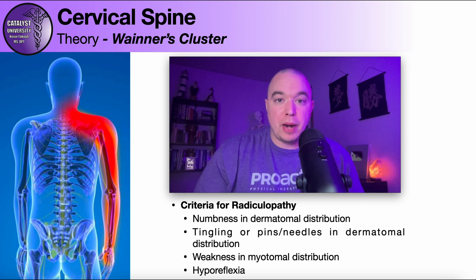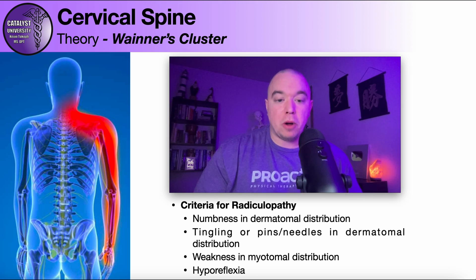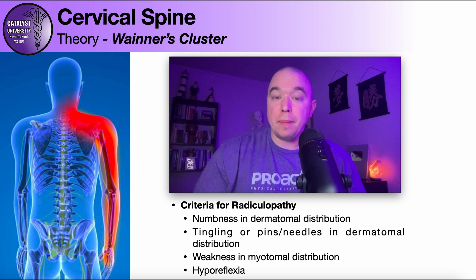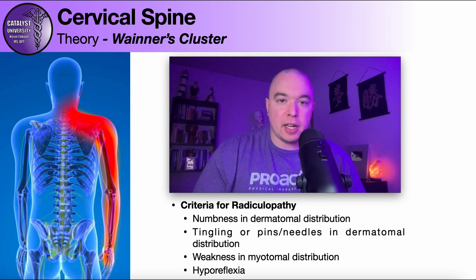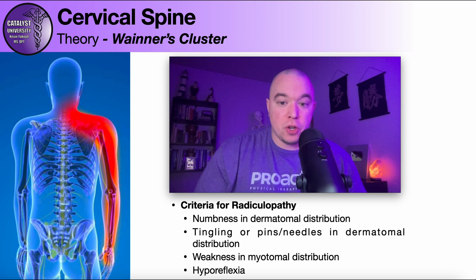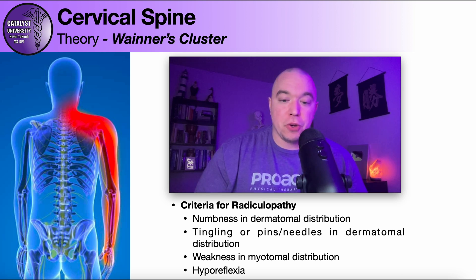If you look at the criteria for a radiculopathy — and this is true of cervical, thoracic, or lumbar radiculopathy — the person would have to have one of the following, just one: numbness in a dermatomal distribution; tingling or pins and needles in a dermatomal distribution. Pins and needles is included with tingling because these changes in sensation are very subjective, and it needs to be in a dermatomal distribution.